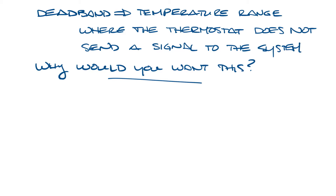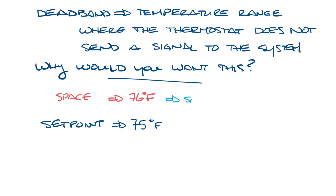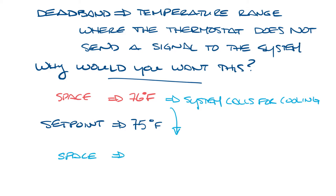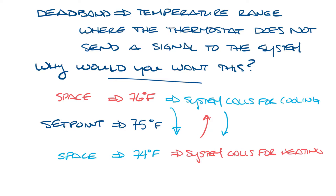Let's say that you have an HVAC system that has heating, cooling, changeover, and your thermostat set point is 75 degrees. If your space is 76 degrees, the thermostat will call for cooling to get the space back to 75 degrees, so the cooling goes on and it starts cooling the space. Let's say the system cools the space down to 74 degrees. Since the set point is 75 degrees, now the thermostat will call for heat. And then when it gets to 76 degrees, it's going to call for cooling again, back down to 74, call for heating — and it will go back and forth like this. You really don't want your system working like this. You don't want it switching between heating and cooling all day.